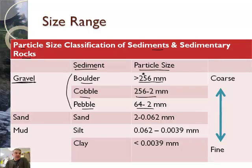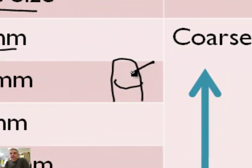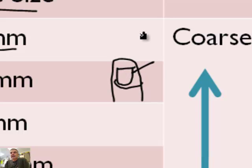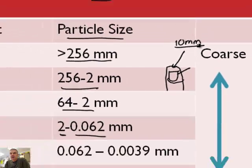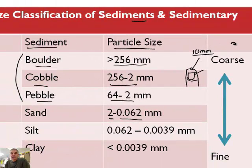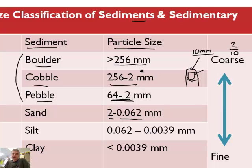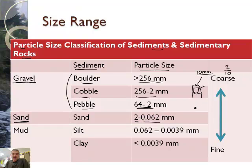We see it getting smaller and smaller. Sand is its own category — it's between 2 millimeters and 0.062 millimeters. Just to give you an idea of how big a millimeter is: if you take your fingernail, your fingernail is about 10 millimeters in width for the average person. So a sand particle would be about 2 tenths of that. A rock the size of your fingernail would be called a pebble. Sand particles can be very tiny — 0.062 millimeters.